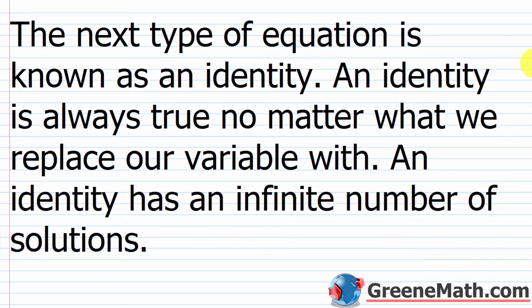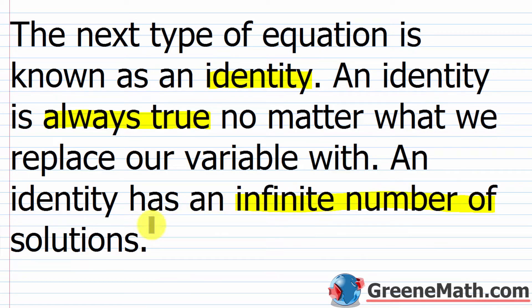The next type of equation is known as an identity. An identity is always true, no matter what we replace our variable with — whether it's a billion, negative 2, 4, 27, or negative one-fourth. It does not matter. The key thing is that an identity has an infinite number of solutions.